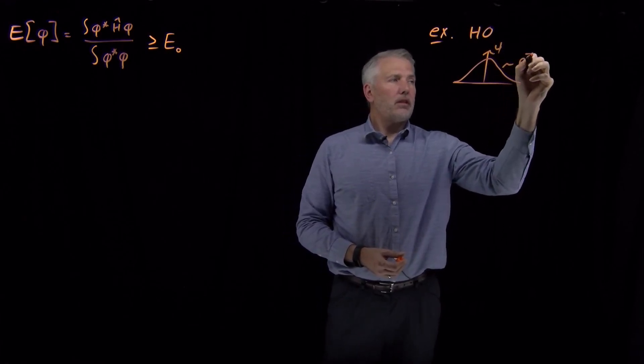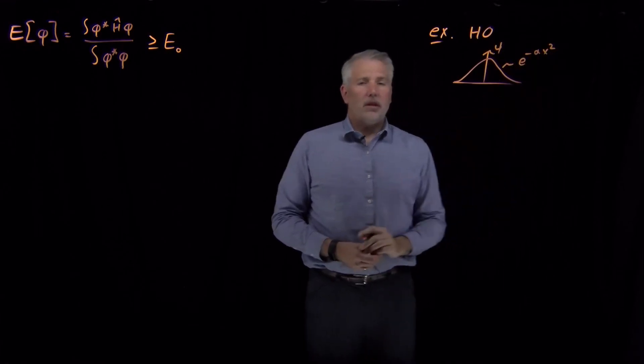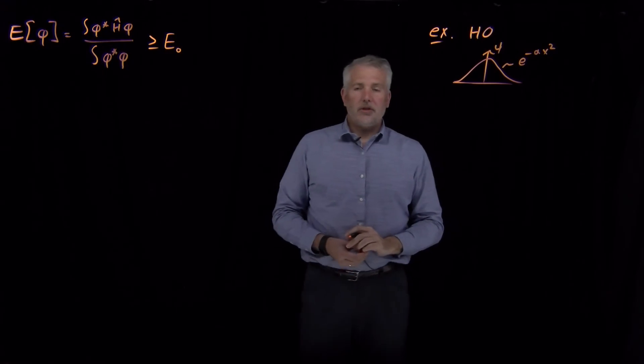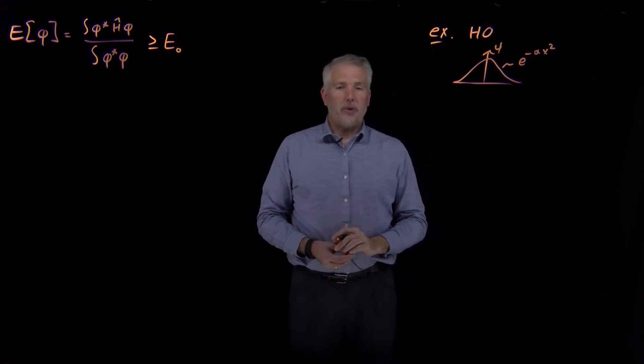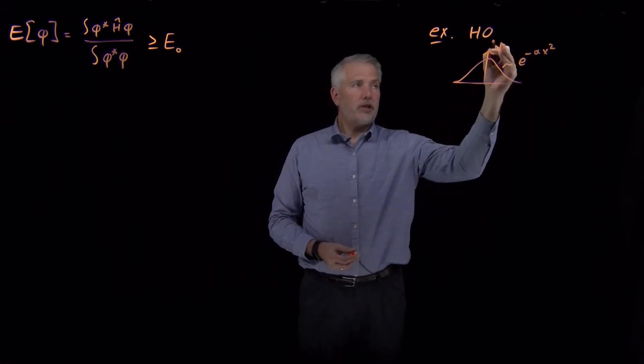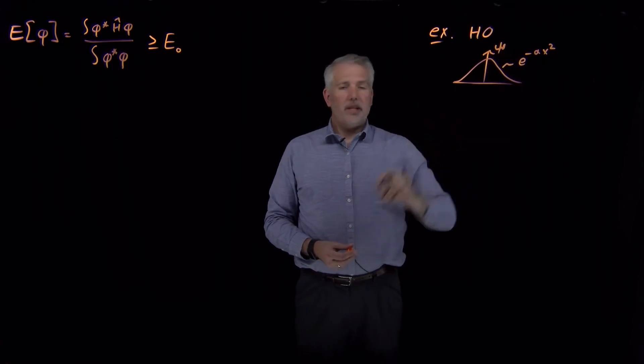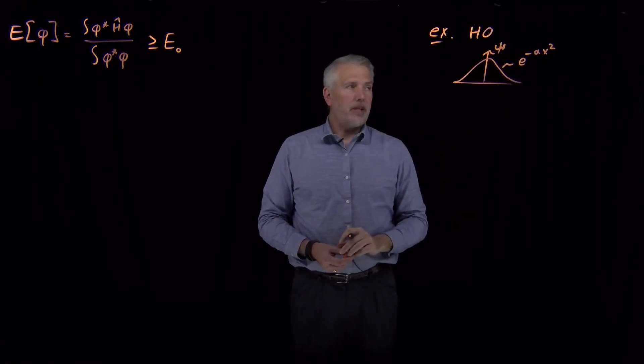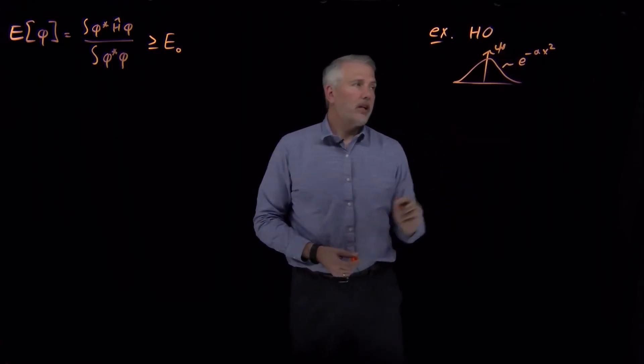That was a system for which we could solve Schrodinger's equation. We found that the ground state wave function looks like a Gaussian, e to the minus some constant times x squared.